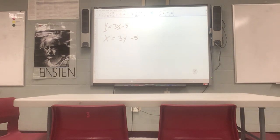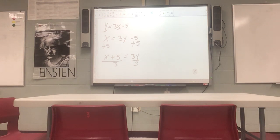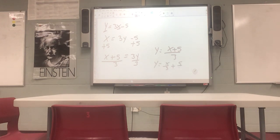We've done step one — switch the variables. Now step two: we've got a new equation, we have to solve it for y. What's our first step to get y all by itself? Think of it like normal equation solving — get rid of what's being added or subtracted first. Five is being subtracted, so we add five. We don't know what x plus five is, we just leave it as x plus five. Now the only thing happening to y is it's being multiplied by three, so we undo that by dividing by three. So y equals x plus five over three. You could also write it as each term divided by three separately — either form is fine.